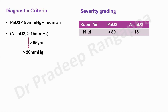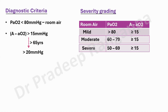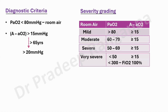There is a severity grading for hepatopulmonary syndrome. Mild is where PaO2 is more than 80 or AA gradient more than 15. Moderate is PaO2 60 to 79, with AA more than 15. Severe has AA more than 15. Very severe is where even on ventilator with FiO2 100%, the PF ratio is less than 300 or PaO2 less than 50 with AA more than 15. So mild, moderate, severe, and very severe is the classification of severity of hepatopulmonary syndrome.